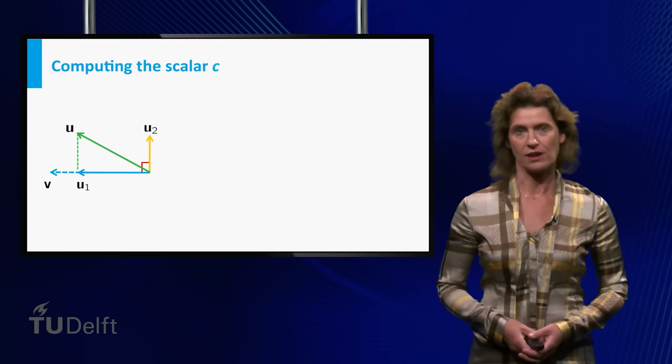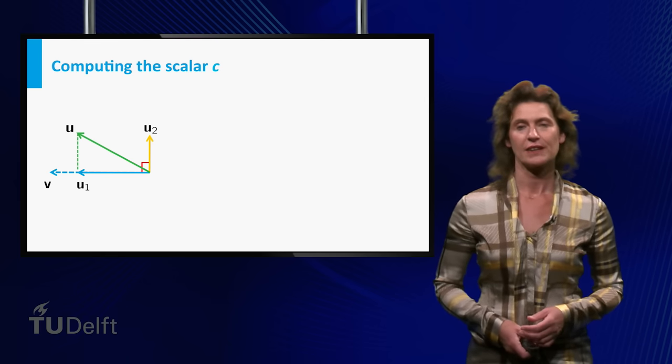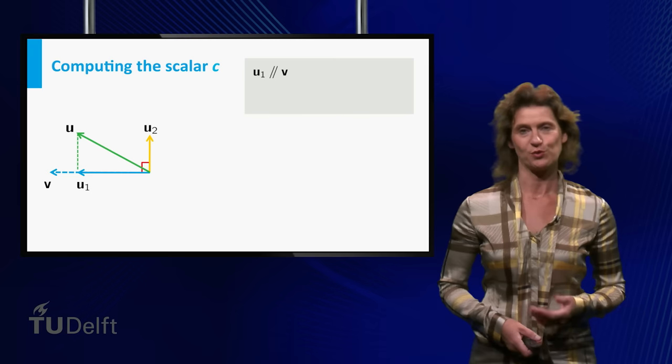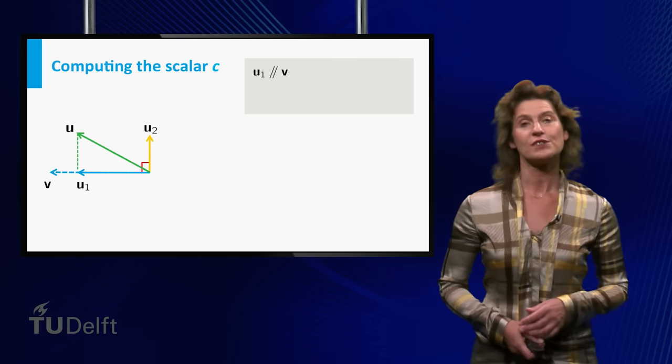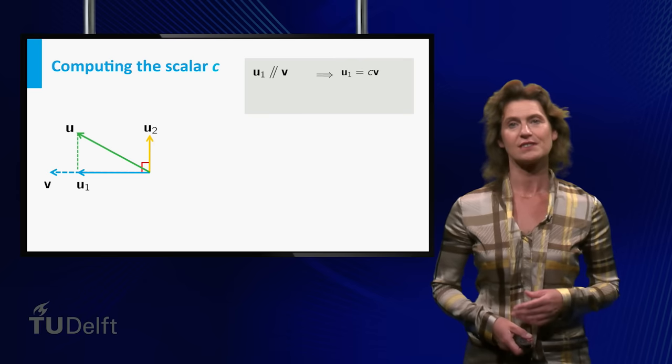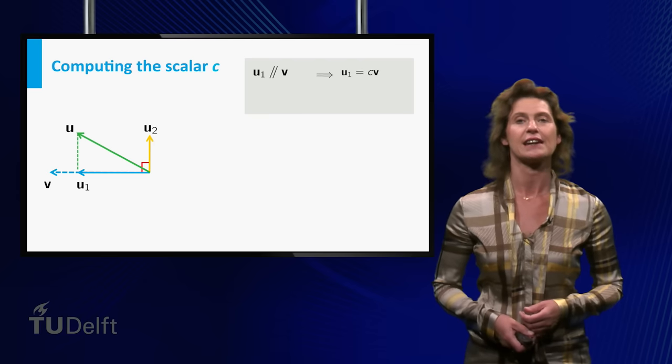The fact that u1 is a projection of u onto v implies that u1 is parallel to v. So it is a scalar multiple of v, which amounts to saying that u1 equals c times v for some scalar c.